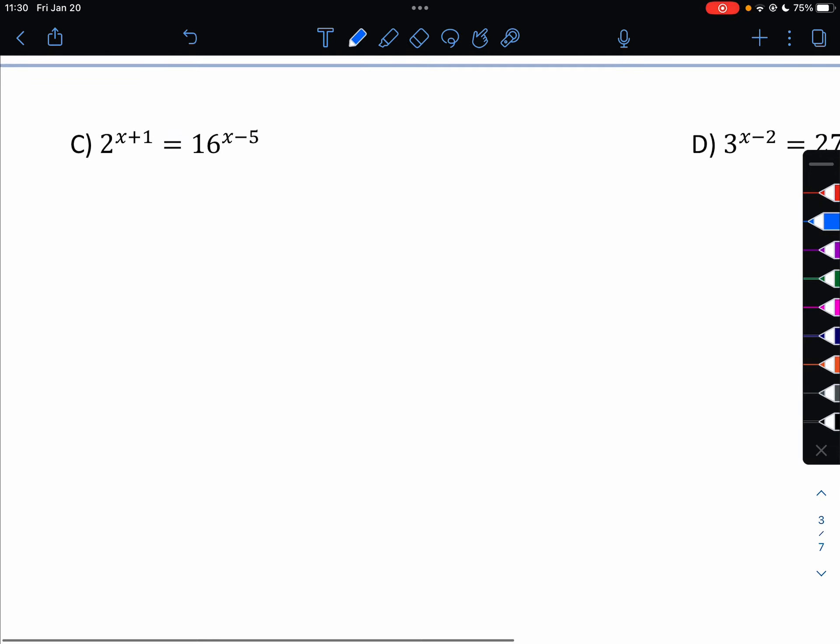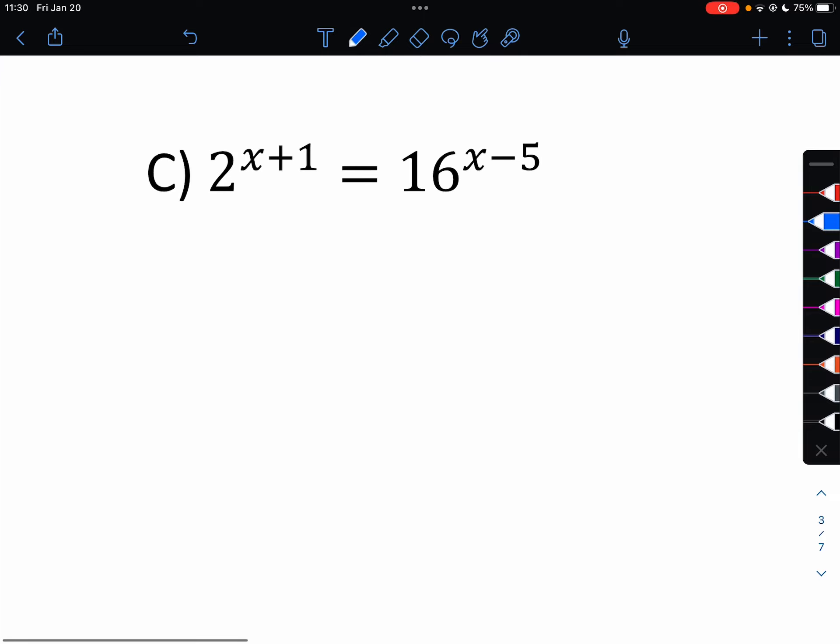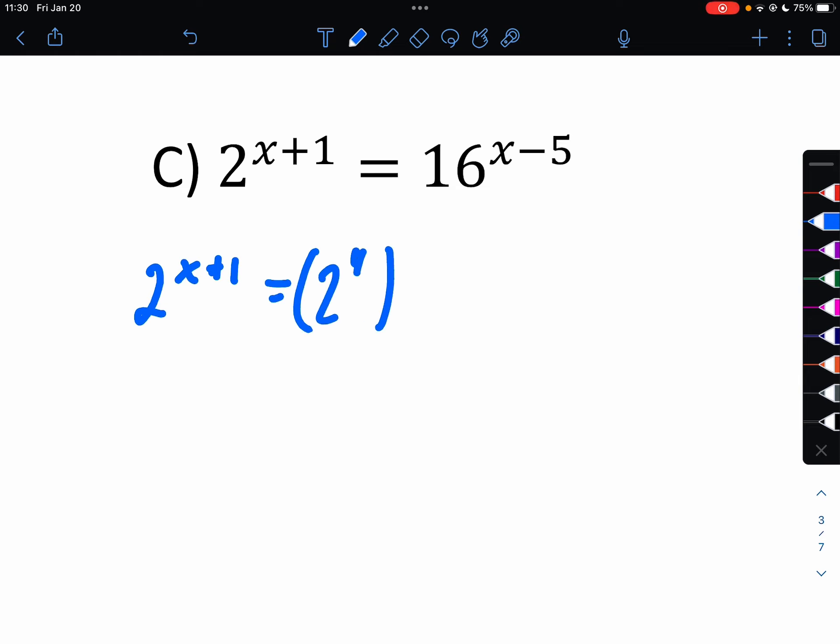Next slide here. Again, we're going to do powers of 2 for these two. So 2 to the x plus 1 equals 2 to the 4th to the x minus 5. So then x plus 1 equals 4x minus 20. So x would be 7.